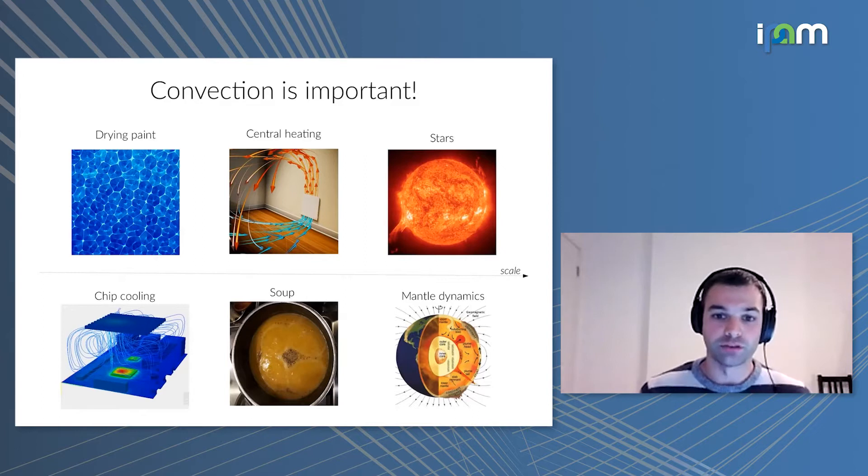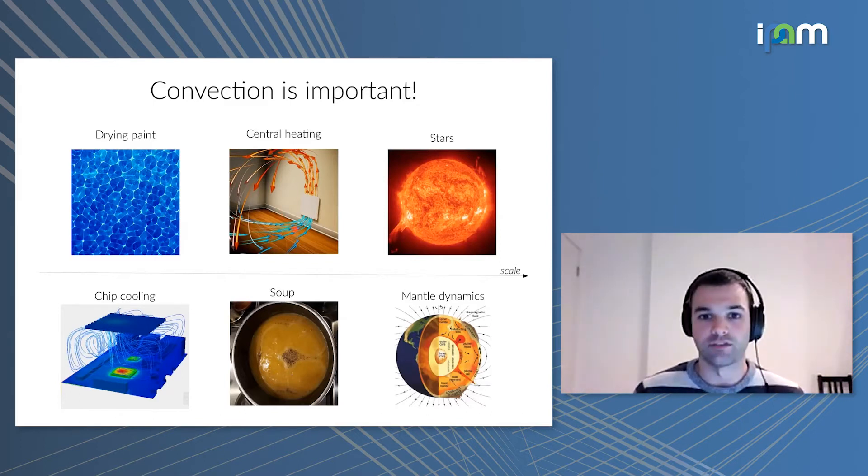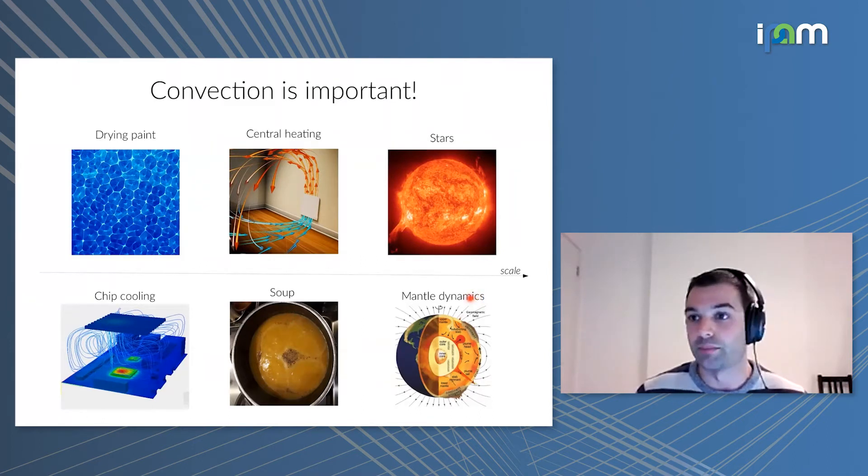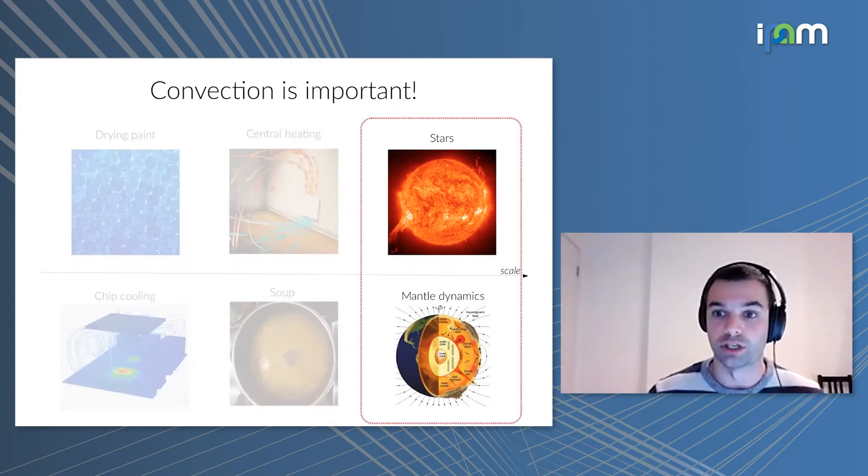The way we force convection varies at different scales. For drying paint, convection is driven by surface tension. Standard Rayleigh-Benard convection is boundary driven, like central heating with a radiator or heating soup from the bottom. But for astrophysical and geophysical applications, the driving force is internally generated heat by chemical or nuclear reactions. This is the type of convection I want to focus on today, along the lines of what Basil was talking about earlier.